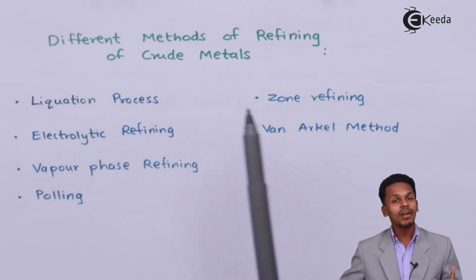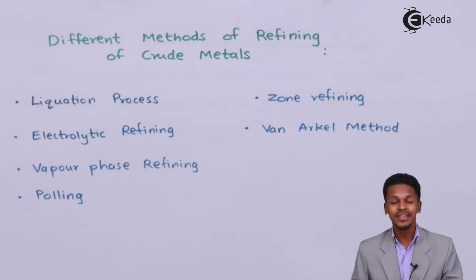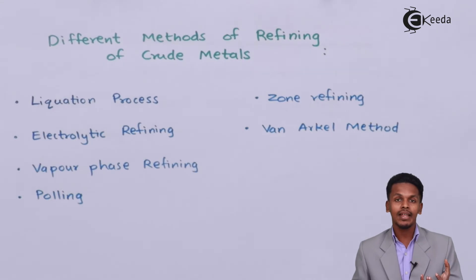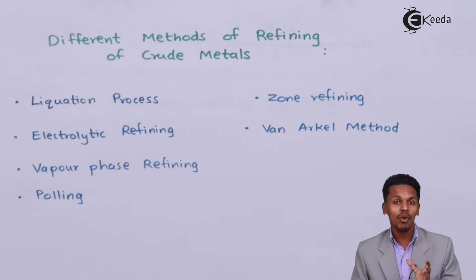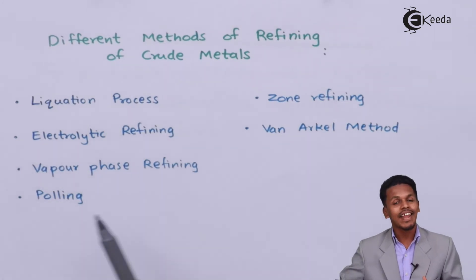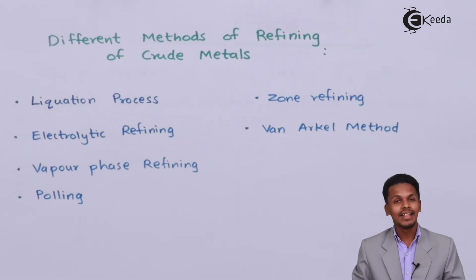These are all the different methods to refine a particular crude metal so that we can obtain a pure metal from a particular ore. We extract the ore from mining and through various processes we obtain a pure metal using these kinds of methods. This was a short description of what we are going to talk about in our future lectures.